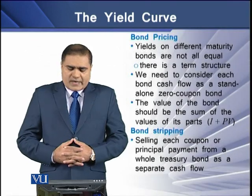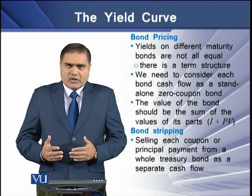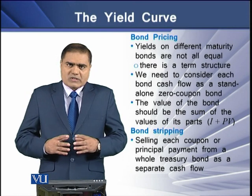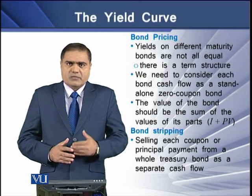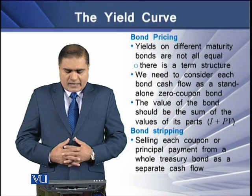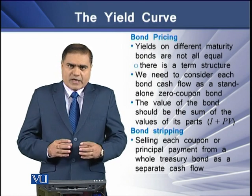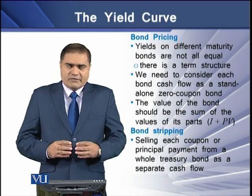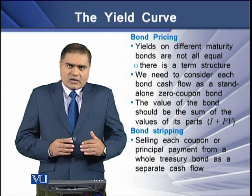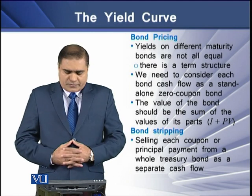Yields on different maturity bonds are not always equal because there exists some term structure. In this scenario, we need to consider each bond's cash flow as an individual cash flow, or as a stand-alone zero coupon bond.